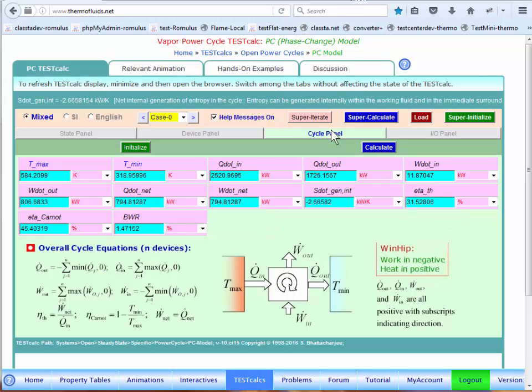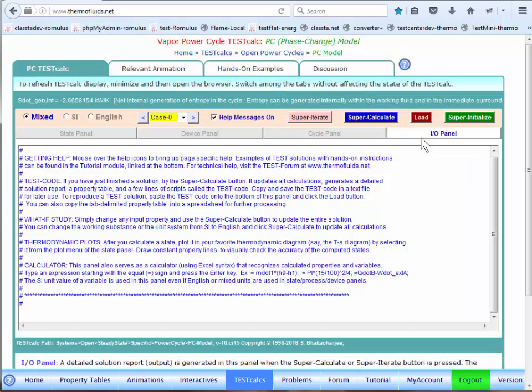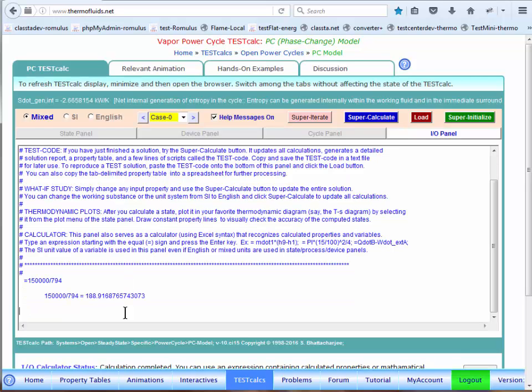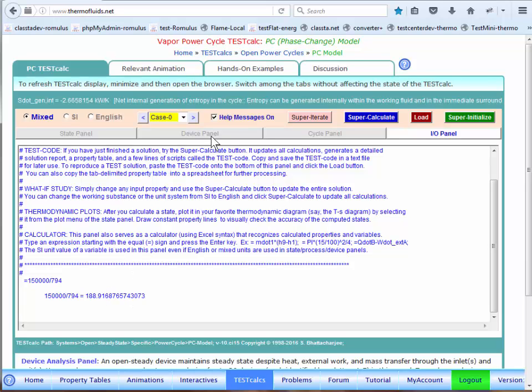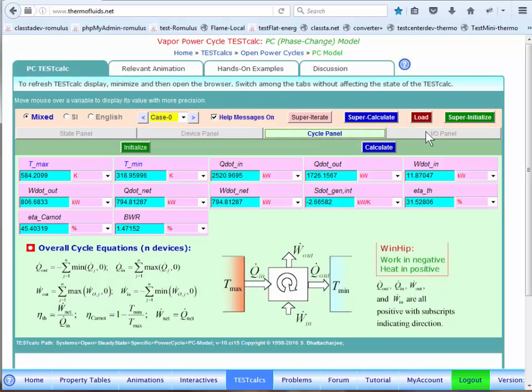However, in this particular problem, if you go to—794 kilowatt is not the power. Power output of this plant is 150 megawatt. So, now, to scale it up, all we have to do is to find 150,000 kilowatt divided by 794.8. That gives us 188.72 kg per second.